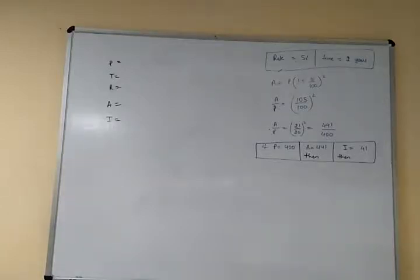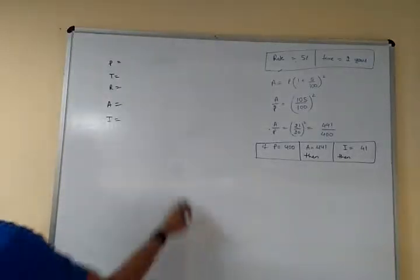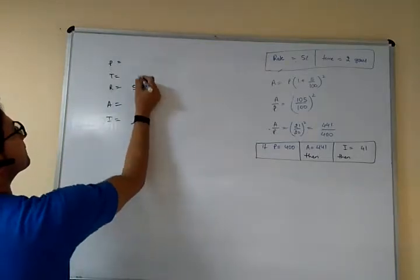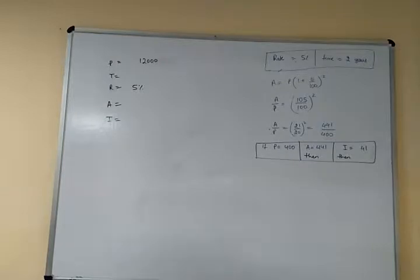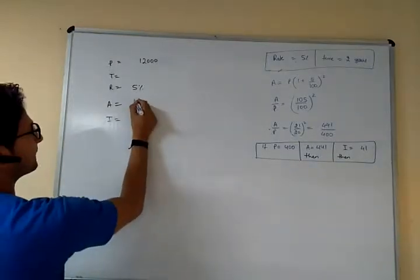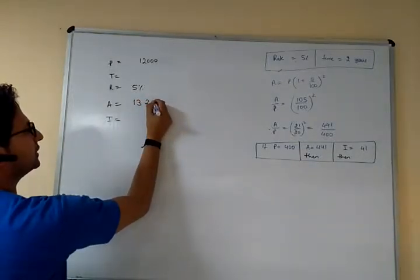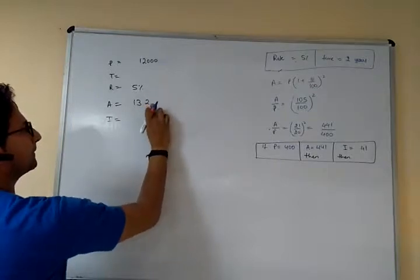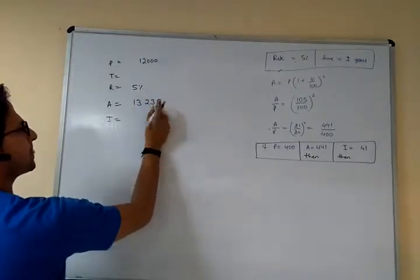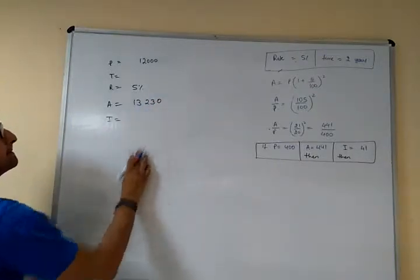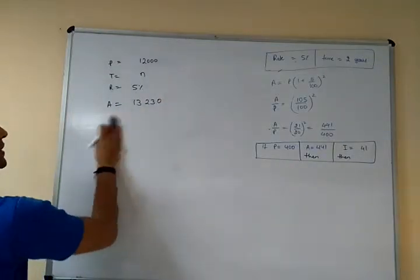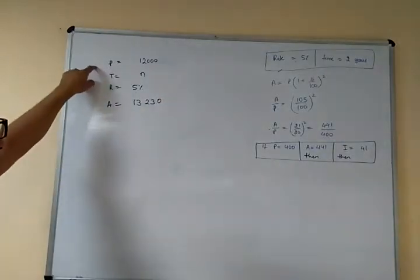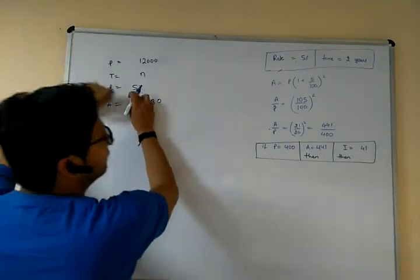I invested a sum of rupees 12,000 at 5% per annum compound interest. She received an amount of rupees 13,230 after n years. Find the time n years. Amount, principal, rate is 5%.